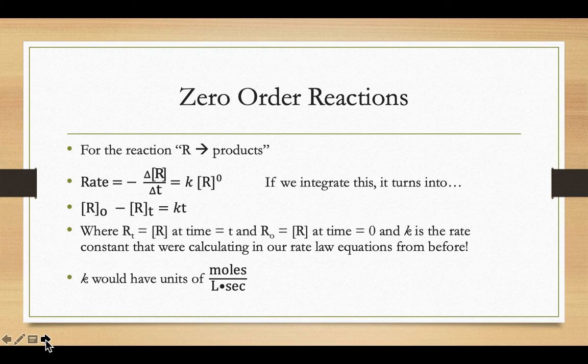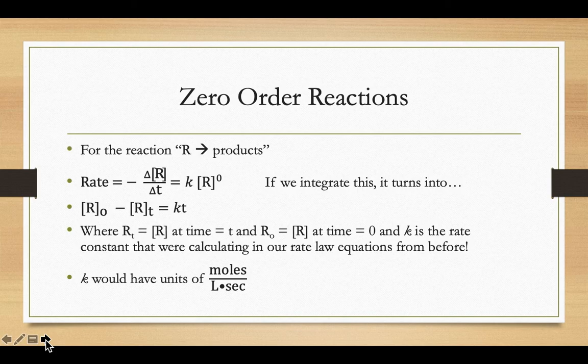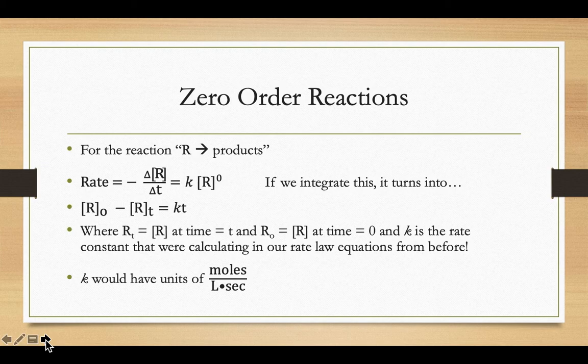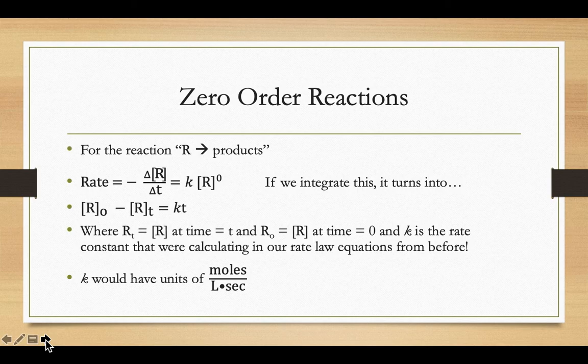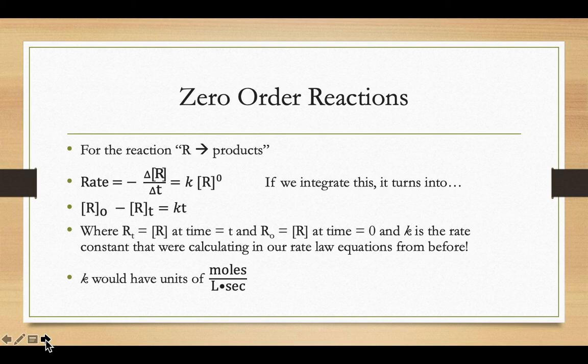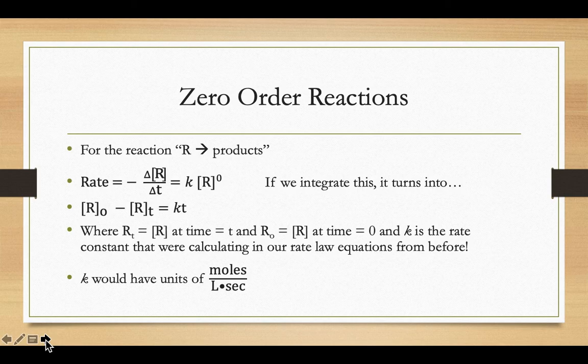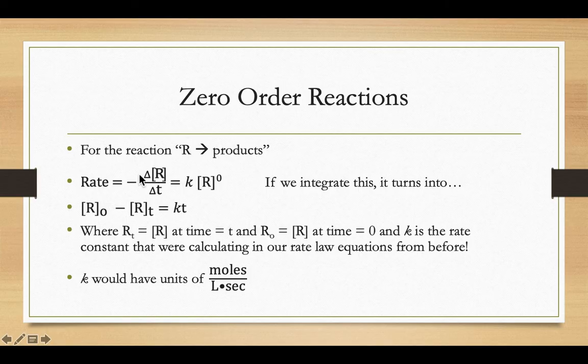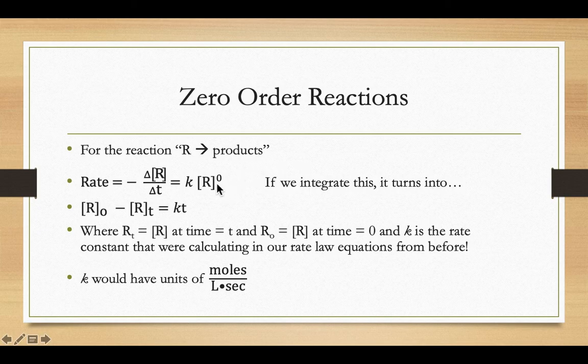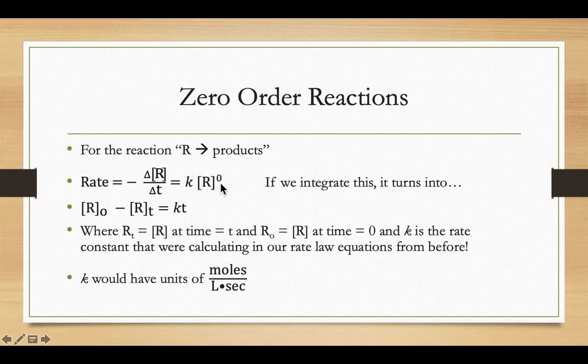So if you had a zero-order reaction where your reactants, R, are turning into products, our R would be disappearing, right? So our R final, in theory, would be zero. Our R initial is whatever the concentration is at the beginning. Because our rates are always put in terms of a positive value, that's why we flip that sign, because R final would be smaller than R initial. And then if it's a zero-order rate law, that means that our exponent, our order for the concentration of R would be zero. Well, anything to the zero power is just one.